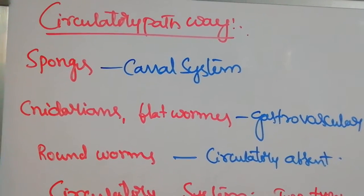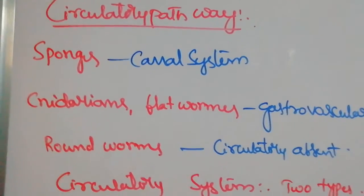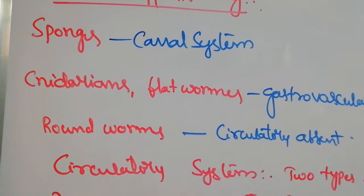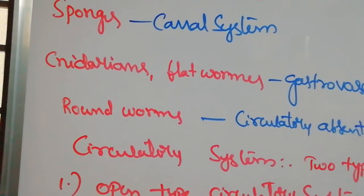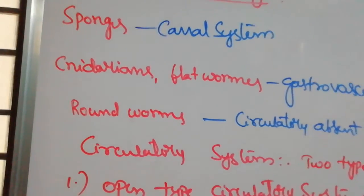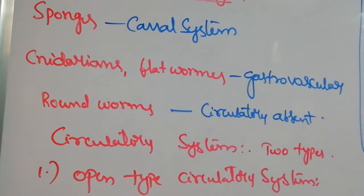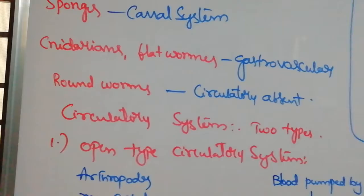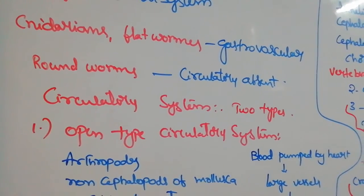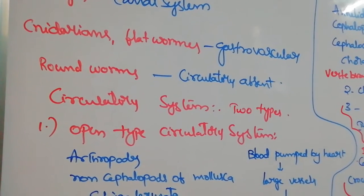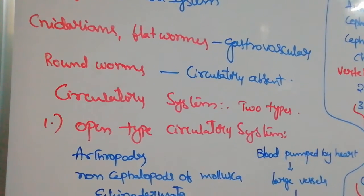Next topic is circulatory pathways. In lower organisms like sponges, canal system is present for digestion, respiration, and circulation. Whereas cnidarians and flatworms have a gastrovascular system through which food and gases are exchanged and transported.